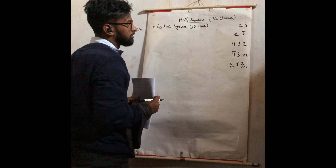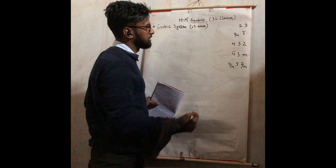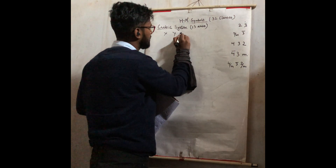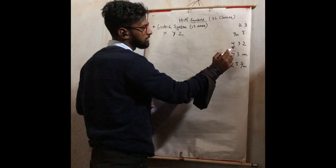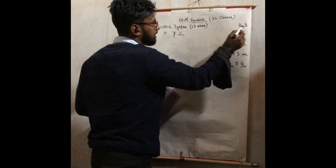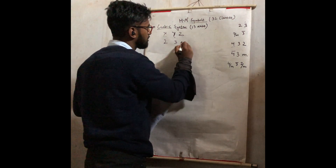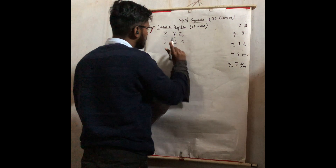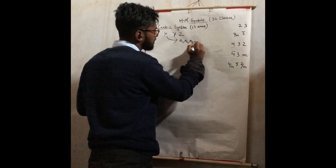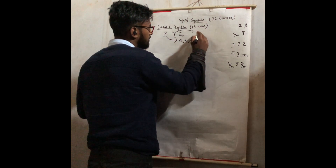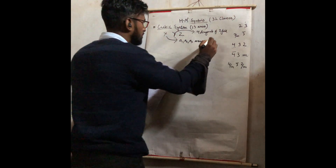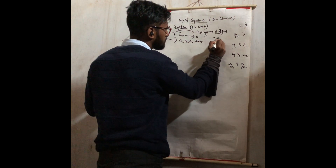We will begin with 2 3. Before we begin, you must know how the operation proceeds. In these 3-component classes, we take x, y and z. The first element is represented by x, the second by y, and the third by z. For 2 3, x represents the 3 perpendicular axes a1, a2, a3. Y represents the 4 diagonal axes of 3-fold symmetry. And z represents the 6 diagonals of 2-fold symmetry.